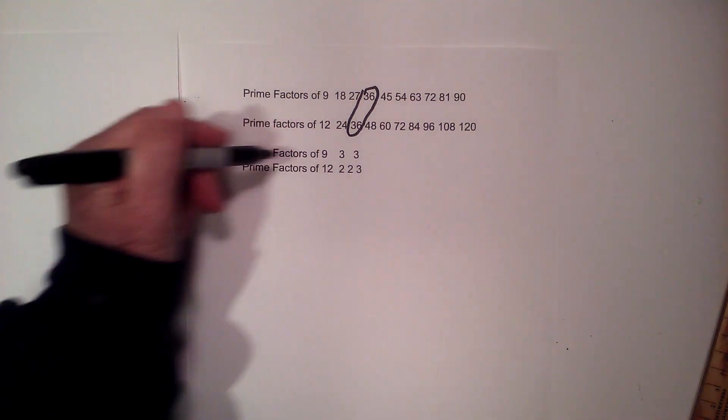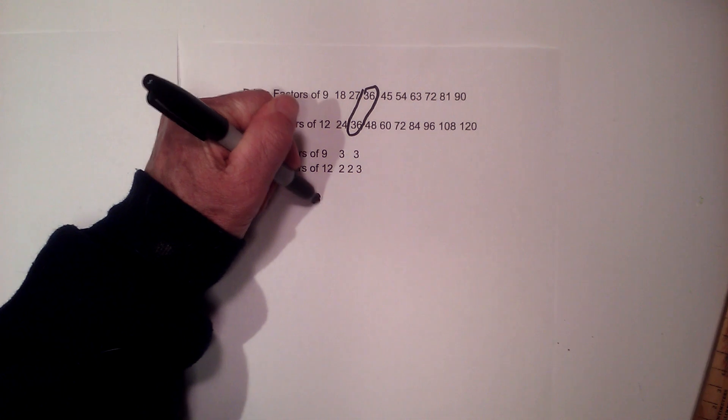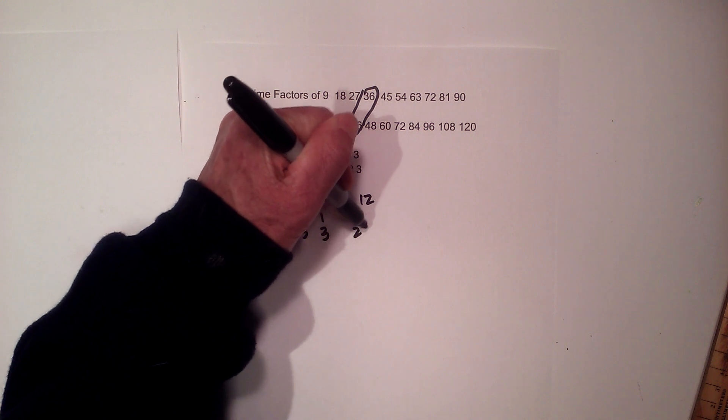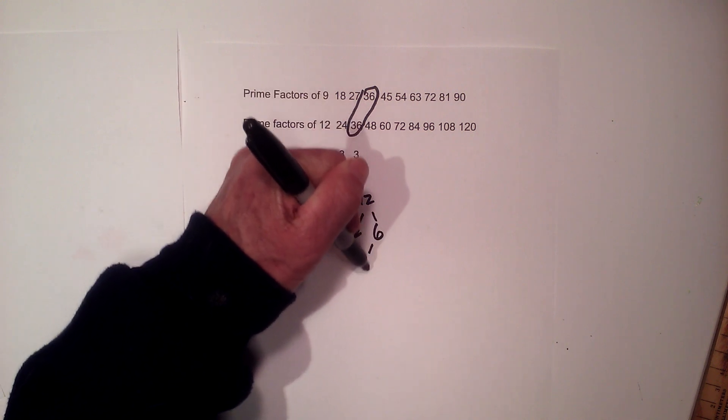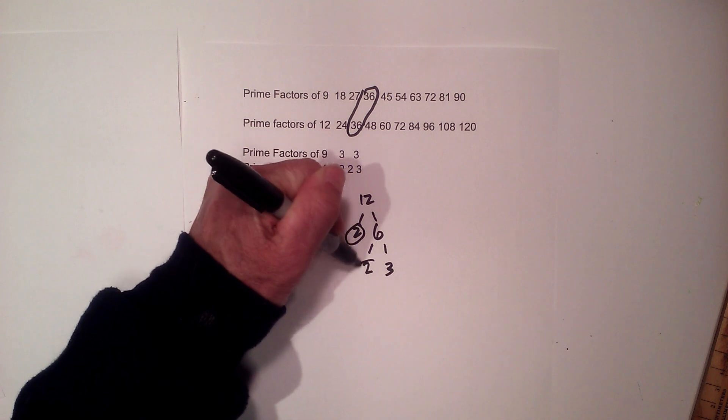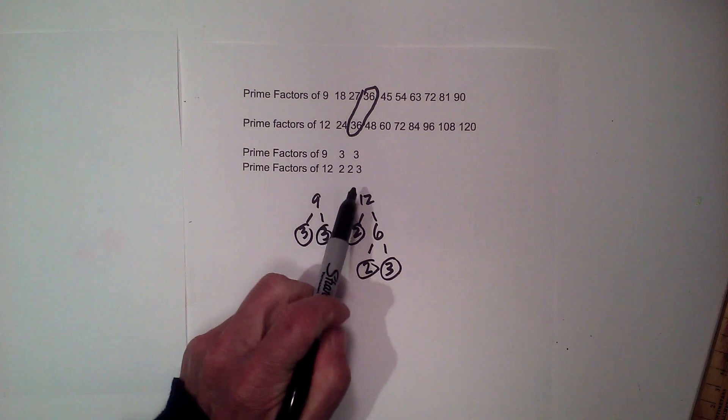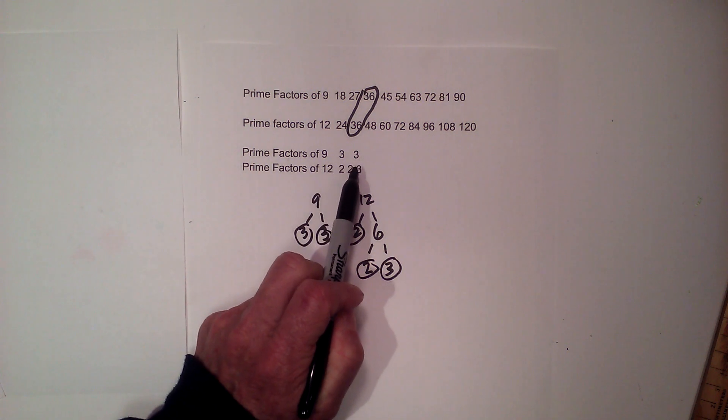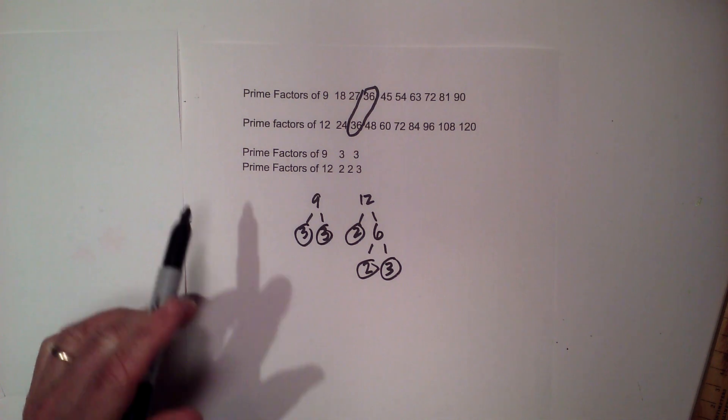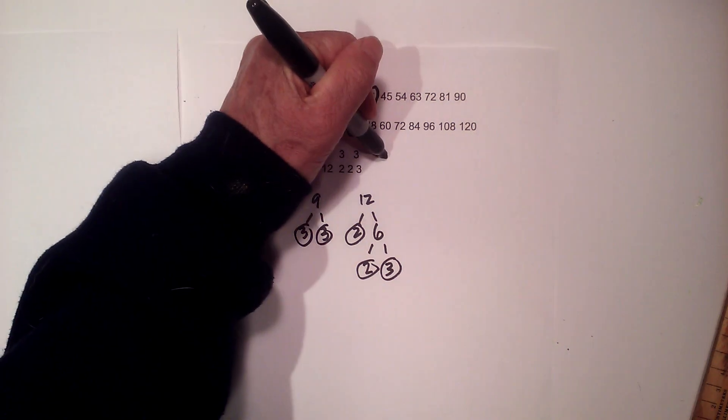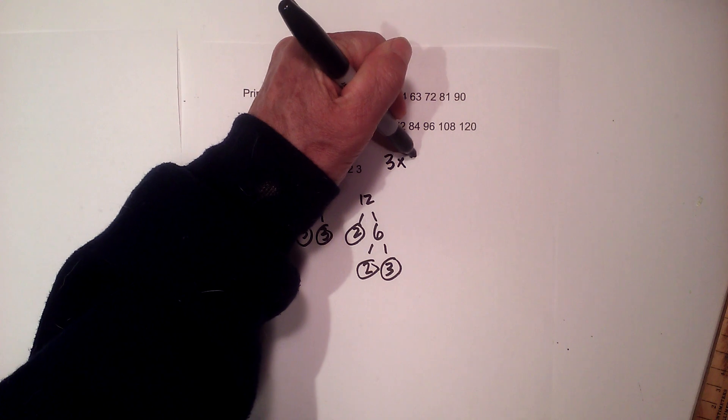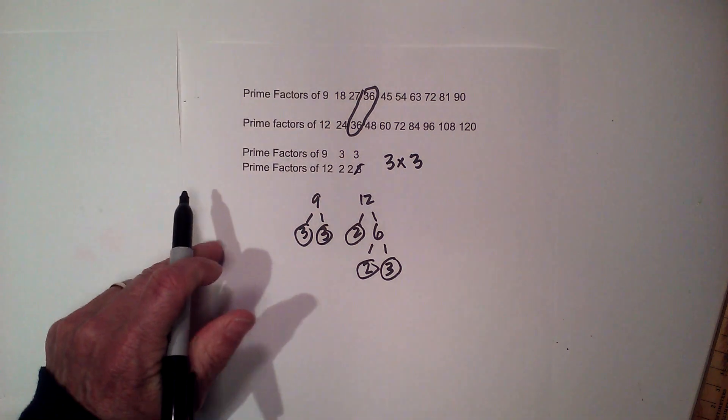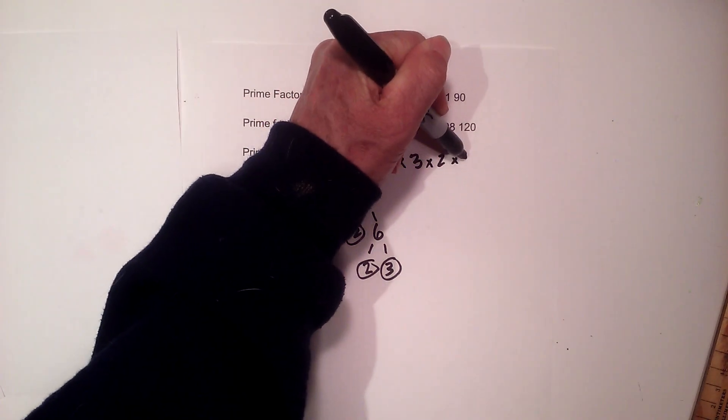Now I can use the same technique using the prime factors. Factor tree: we have three times three for nine, and then twelve is two times six, then two times three. I'll circle the prime numbers. And that's where I got three and three for nine, and two times two times three for twelve. Now I multiply them together. So I have three times three, and remember, I have another three, so I'm going to cross this three out, times two, times two.